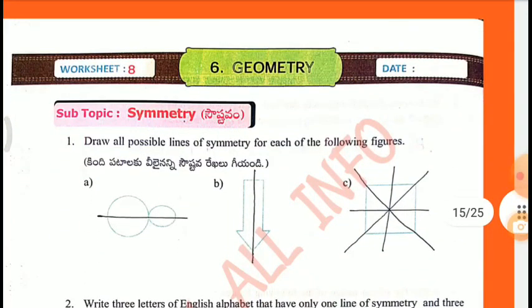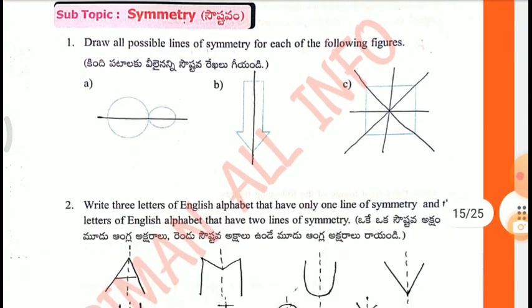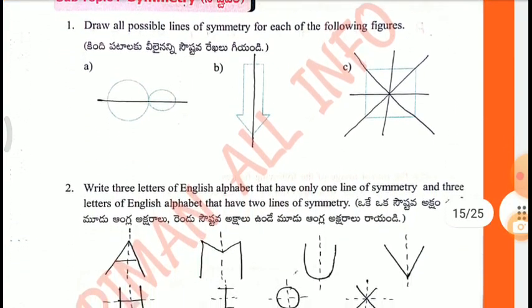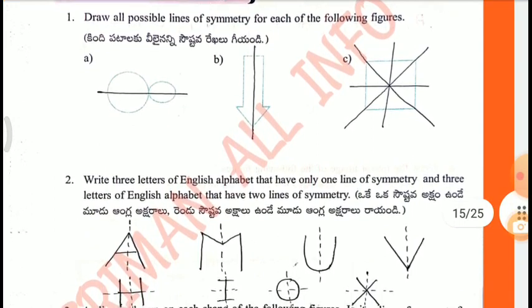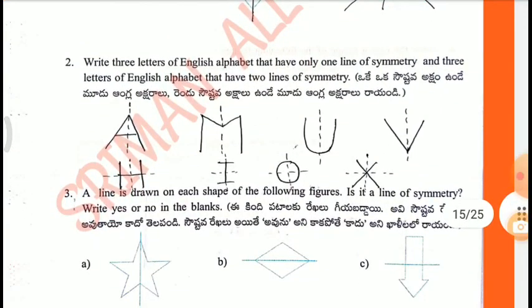Worksheet 8, Symmetry. Draw all possible lines of symmetry for each of the following figures. This is the symmetrical line. A, B, C.